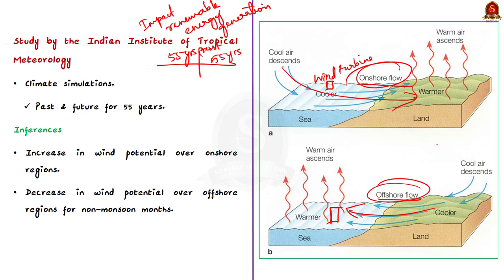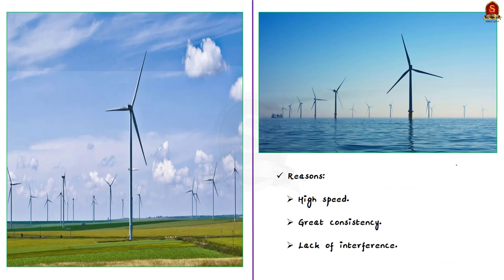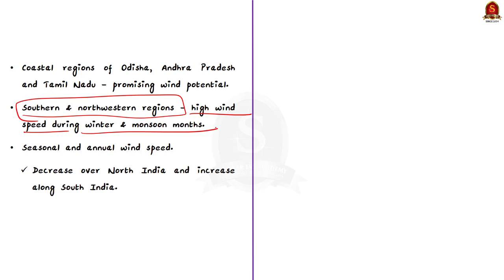Offshore winds are considered more efficient than onshore wind farms because of higher wind speed, greater consistency, and lack of physical interference such as land or human-made objects. So the decreasing offshore wind potential is a loss for us — that is the first inference. The study also indicates that coastal regions of Odisha, Andhra Pradesh, and Tamil Nadu show promising potential for wind energy. The seasonal analysis indicates that the southern and north-western regions will have higher wind speed during winter and monsoon months. Climate change has further added to this wind potential — that is the second inference.